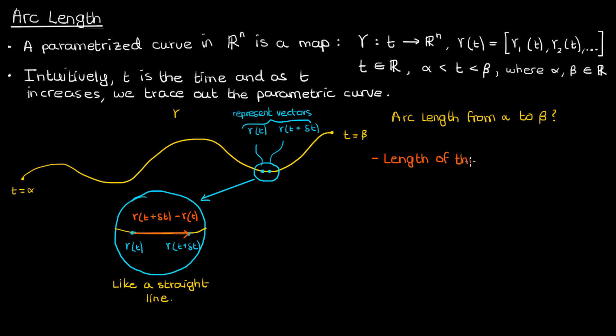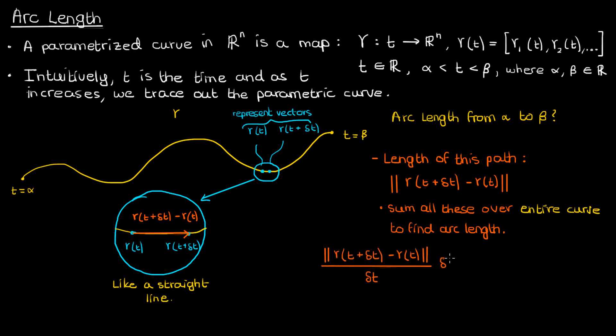The length of the short path defined by this vector will then be the magnitude of this vector. If we want the length of the entire curve, then we'll have to sum all these little lengths over the entire curve. To do that more easily, we'll divide the length of this short path by Δt and then multiply it by Δt.